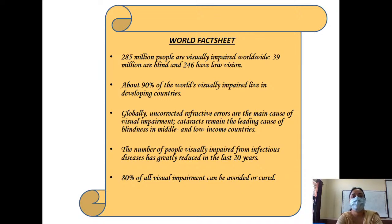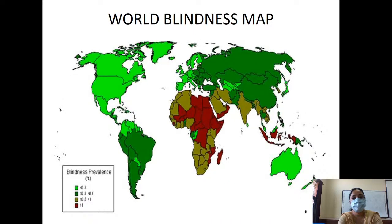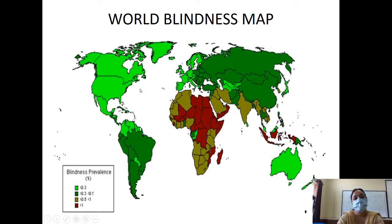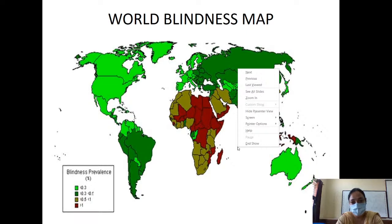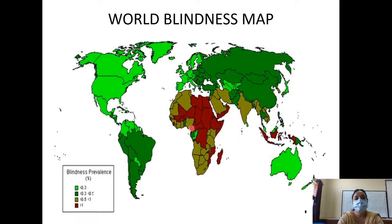If you look at the world blindness map, the green areas - mostly developed countries - show less than 0.3 percent prevalence, whereas the red areas in the sub-Saharan region and some lesser developed island countries have a much higher burden. The olive green zones show more than 0.5 but less than 1 percent prevalence. Most other developing country regions are covered under these categories.